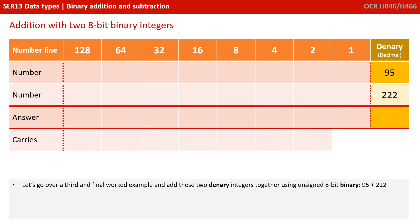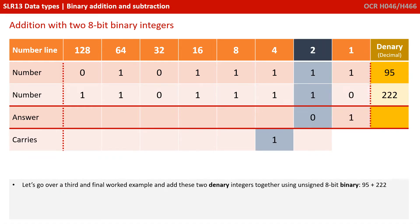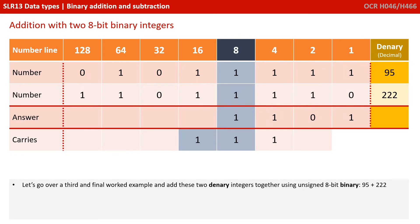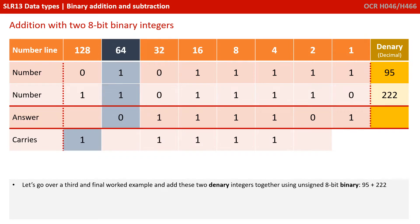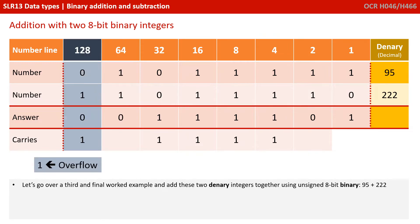Let's do one last example — 95 and 222 in denary. Written out under their binary weighting lines, we start on the right: 1 and 0 is 1; 1 and 1 is 0, carry a 1; then 1, 1 and carry 1 is 1, carry a 1; again 1, 1 and carry 1 is 1, carry a 1; another 1, 1 and carry 1 is 1, carry the 1; 0, 0 plus carry 1 is just 1; 1 and 1 is 0, carry a 1; and here we have 0, 1 and carry 1 is 0, and we need to carry an extra 1.